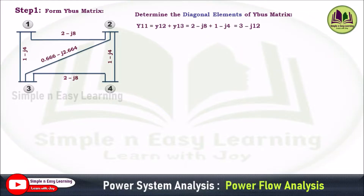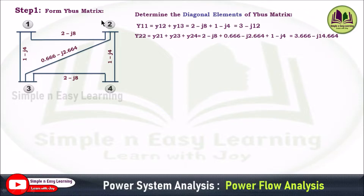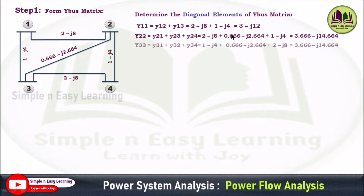Y11: at bus 1, two lines are connected — 1-2 and 1-3. Just add these two admittances and you will get the Y11 value. Similarly, for bus 2, three lines are connected: 2-1, 2-3, and 2-4. Just add all three admittances and you will get the Y22 value.